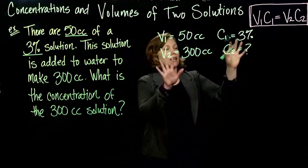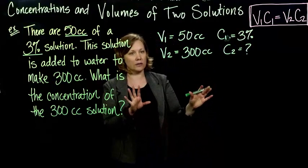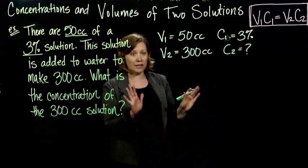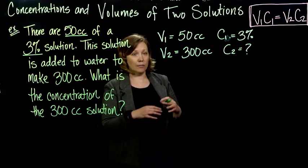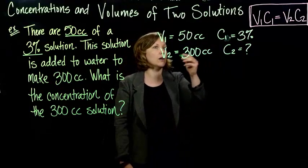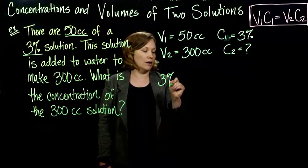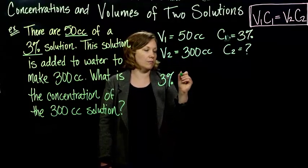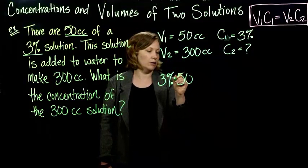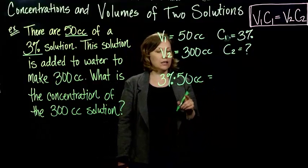So all we have to do is take this and plug it into the formula. The hard part is determining what is what. Once we get in the formula, it's a pretty straightforward linear equation that you already know how to solve. So I have C1, which is my 3%, times my, you can put a little dot there for times, 50 cc's.